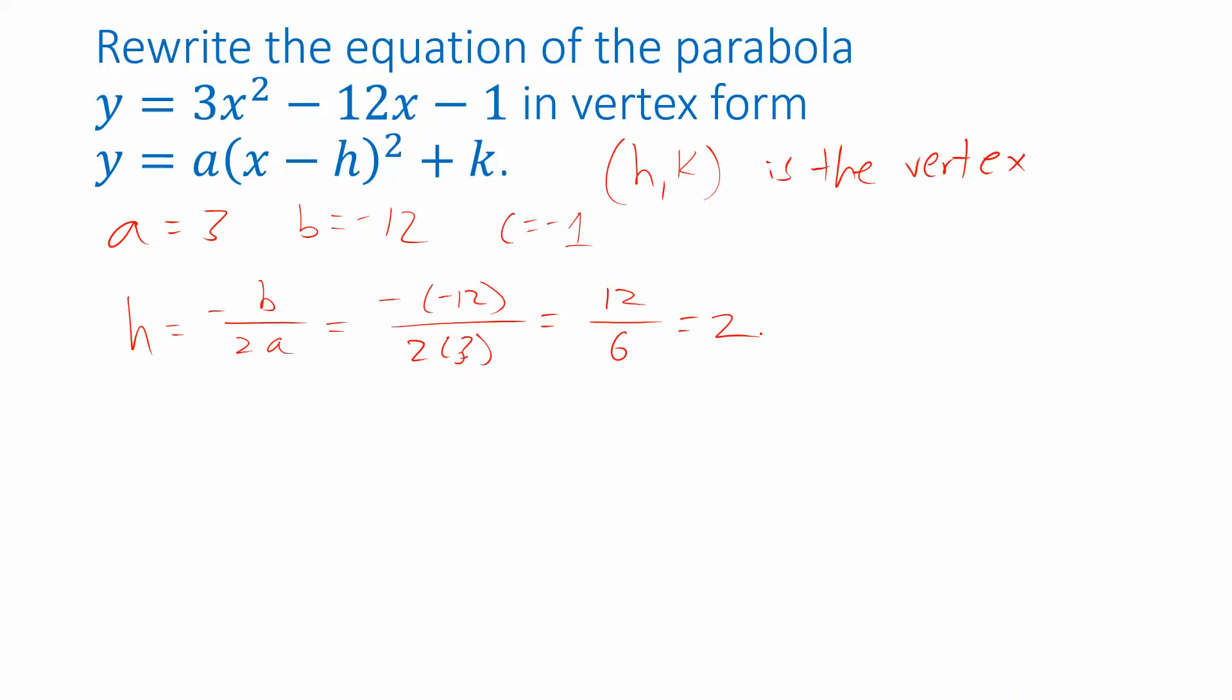And then I can plug that back in to get the y-coordinate of the vertex, which is k. So I take 3 times 2² - 12 times 2 - 1. 2² is 4. 3 times 4 is 12. 12 times 2 is 24. So I'm looking at 12 - 24 - 1. That works out to -13.